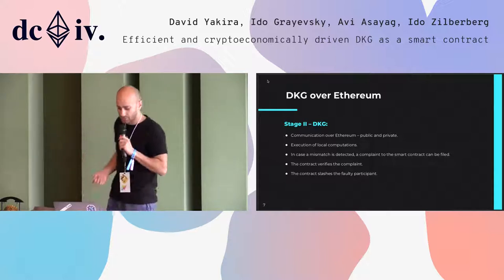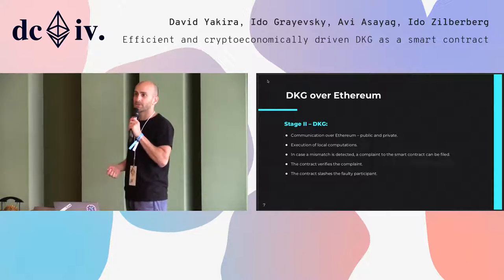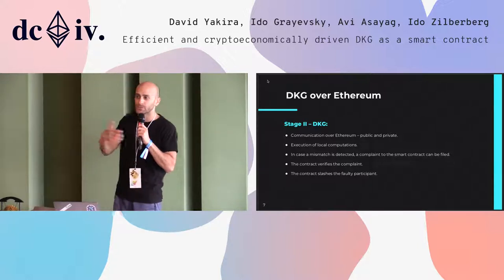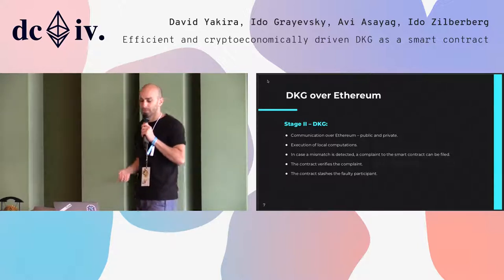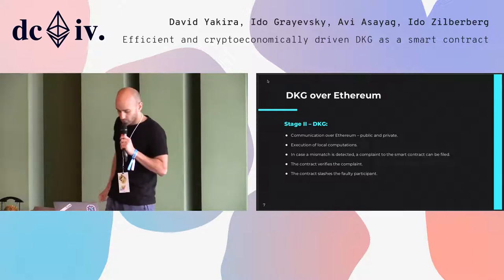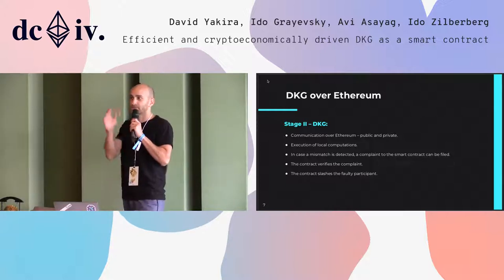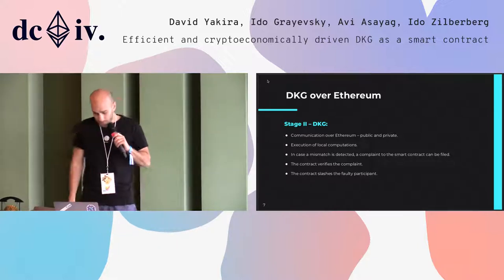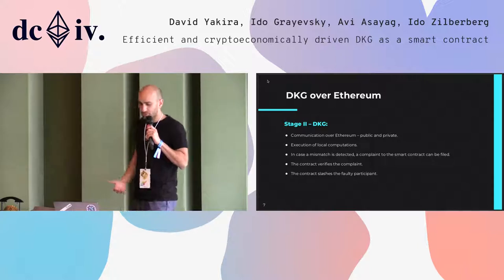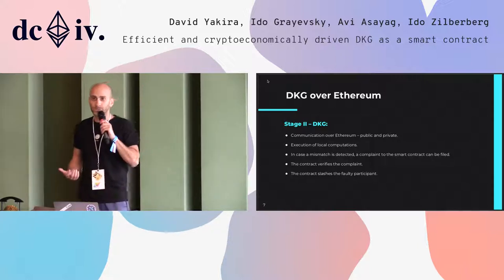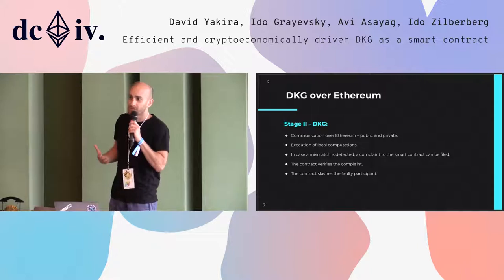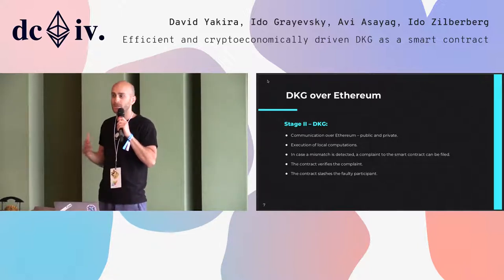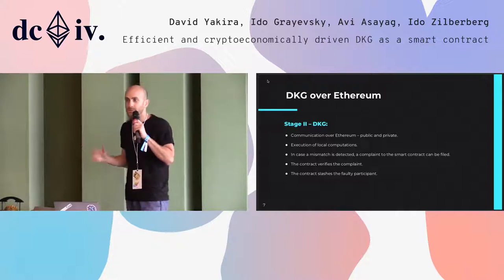In the first communication phase, participants communicate by sending transactions to the smart contract, which is basically data they're distributing among one another. This could be public information available to everybody, or private information destined for a specific participant — in which case they just encrypt their data. After communication is over, the participants execute local computations, and if everything is fine, the DKG is over and every participant has their keys.